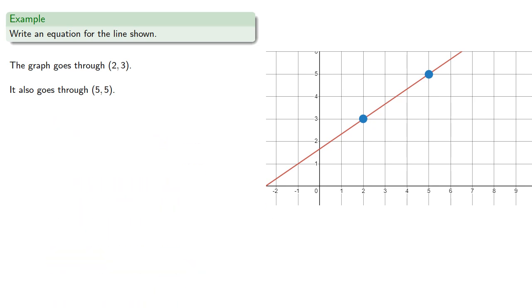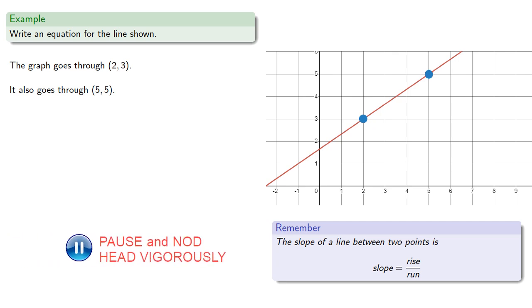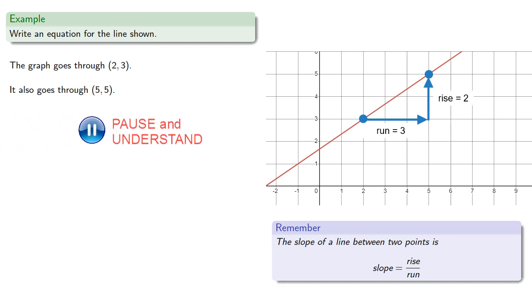Now given the two points, we have a formula that we can use to calculate the slope, but it's probably just as easy to remember that the slope of a line between two points is rise over run. So to go between the two points, we have to go over three units then up two units. And so the slope, rise over run, is two-thirds, and so an equation for the line is y = (2/3)(x - 2) + 3.